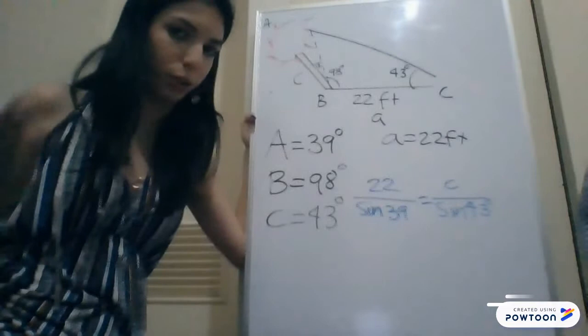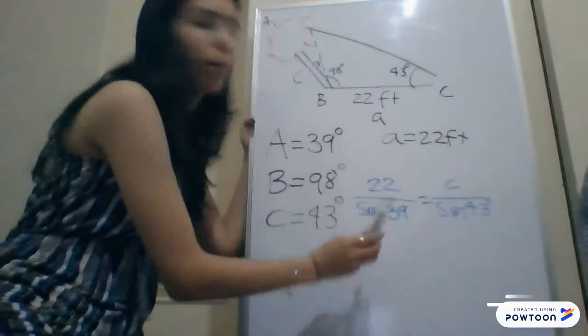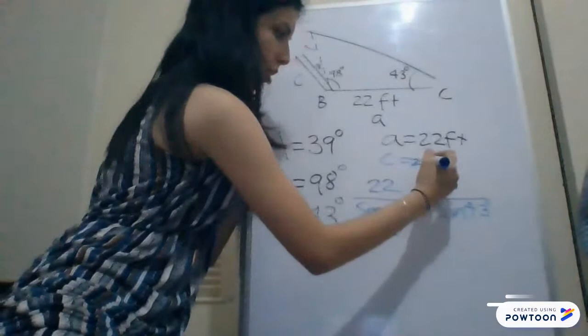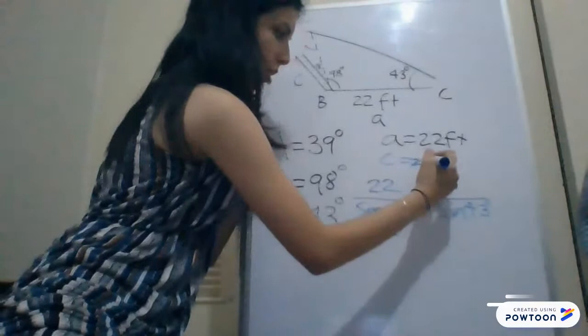So, as we already saw, we already know how to use the law of sines. It's 22 times sine of 43 divided by sine of 39. And the answer will give you C equals 23.84 feet. And that's how you solve an application.